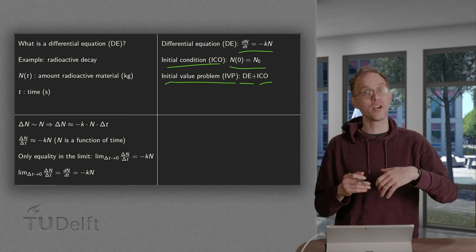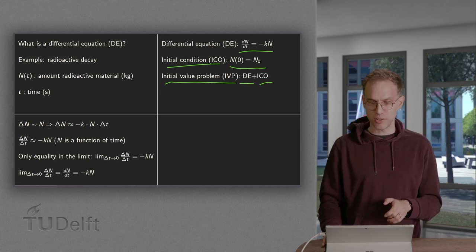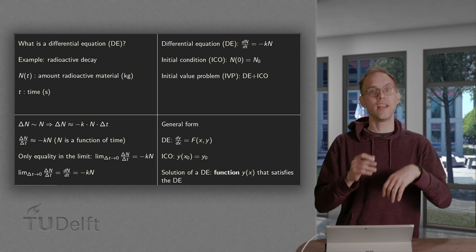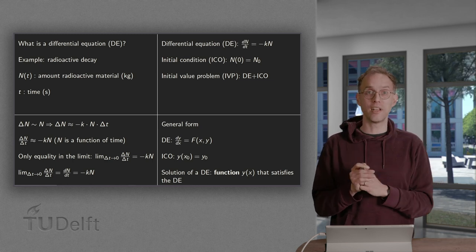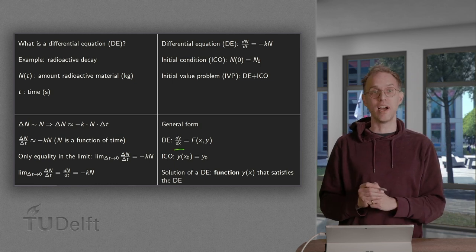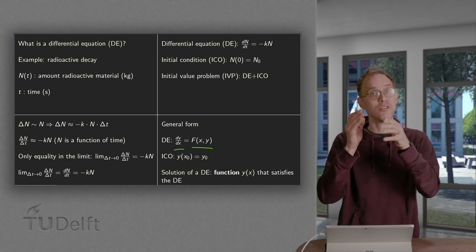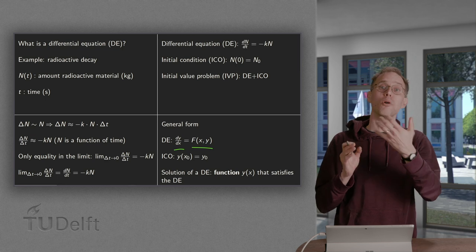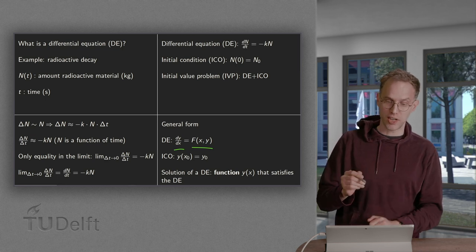And where our independent variable was time, that's why we use T. So usually the more general notation, the more general setup, then our dependent variable will be Y. And our independent variable will be X. Which means that we have dy/dx is some function of Y itself. So dy/dx is a function of Y and also possibly of X. That's our differential equation.